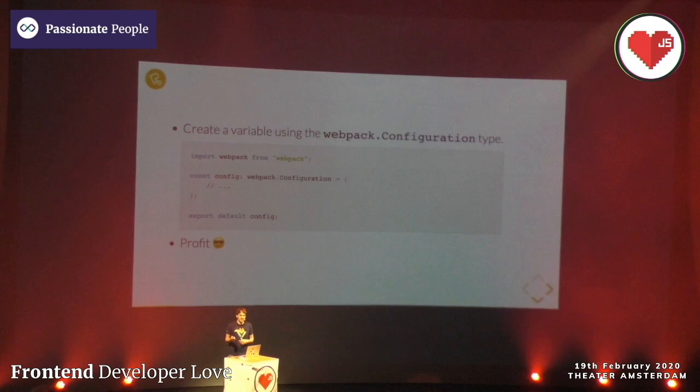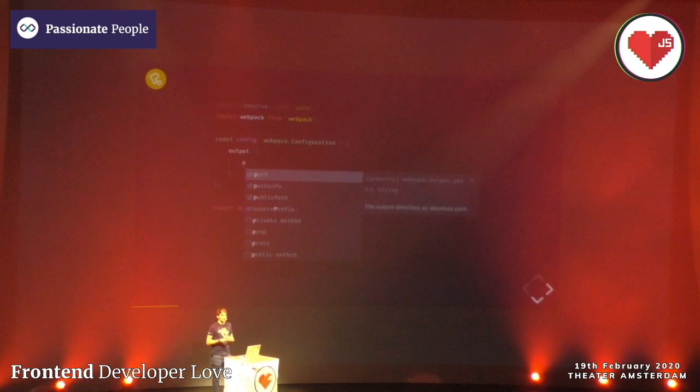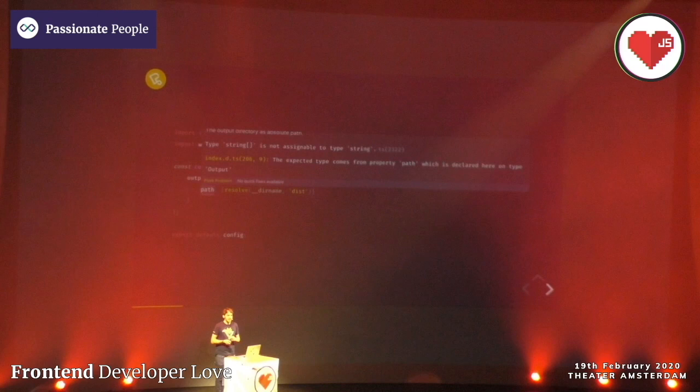Now we're going to profit from this - it will give you nice IntelliSense. So if you don't remember what the output path option was, you just type 'p' and it shows you all the possibilities. It's even able to correct you if you configured something in the wrong way - it can't detect all errors, but at least some of them.